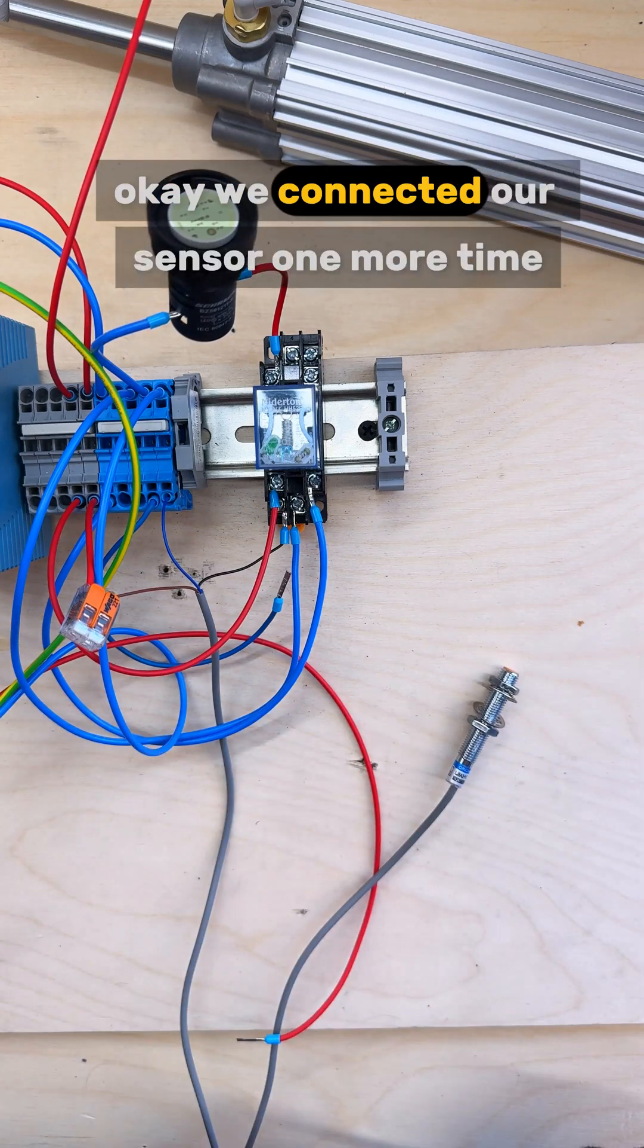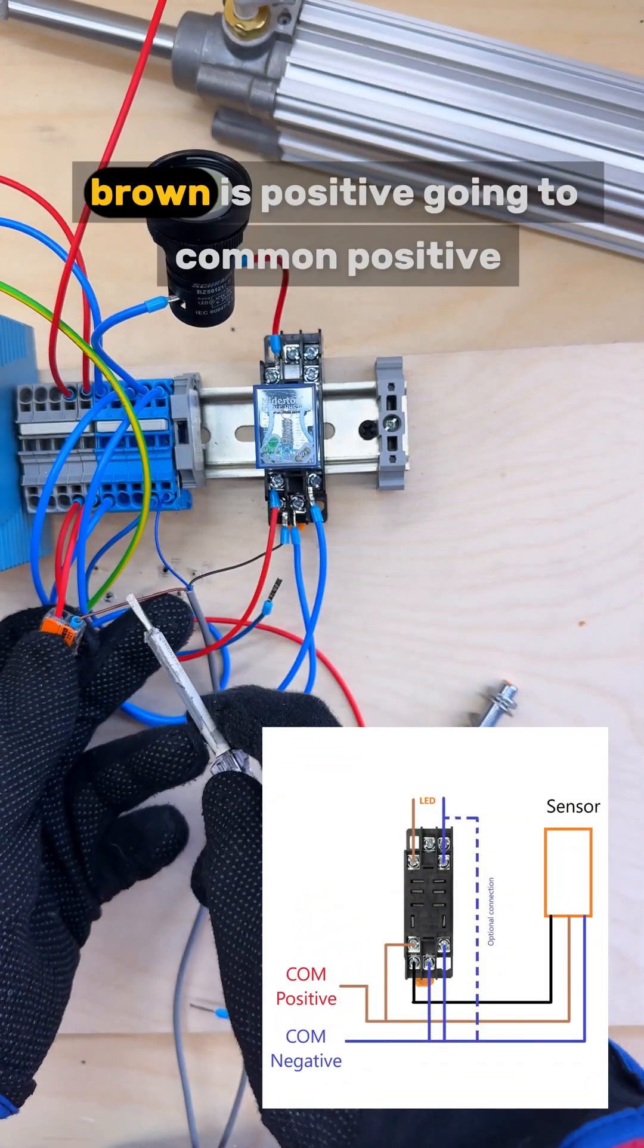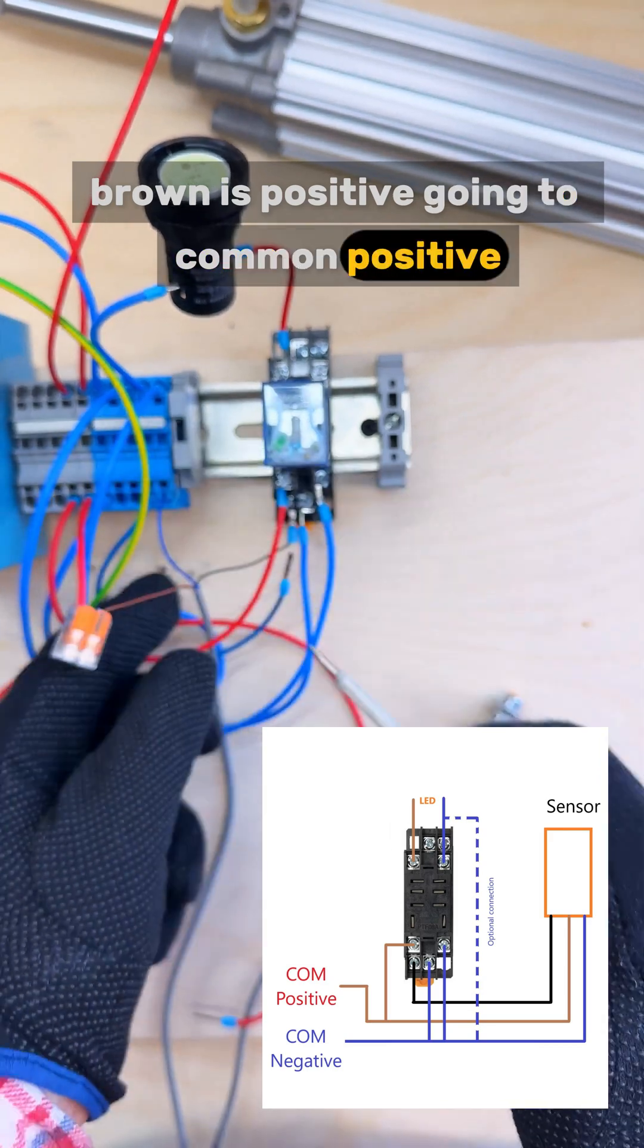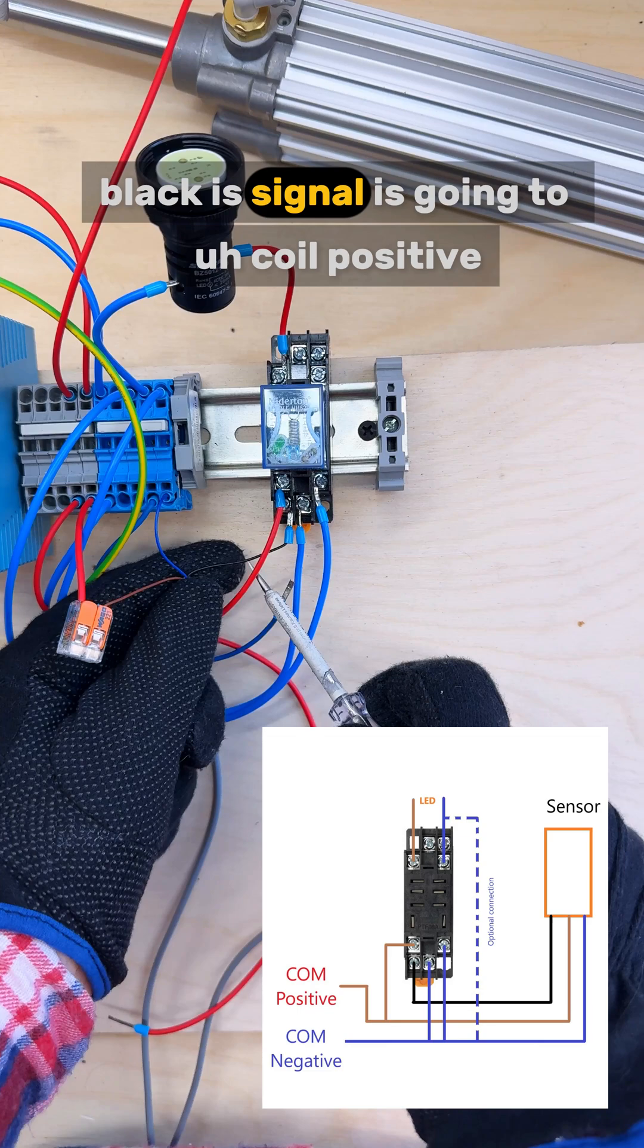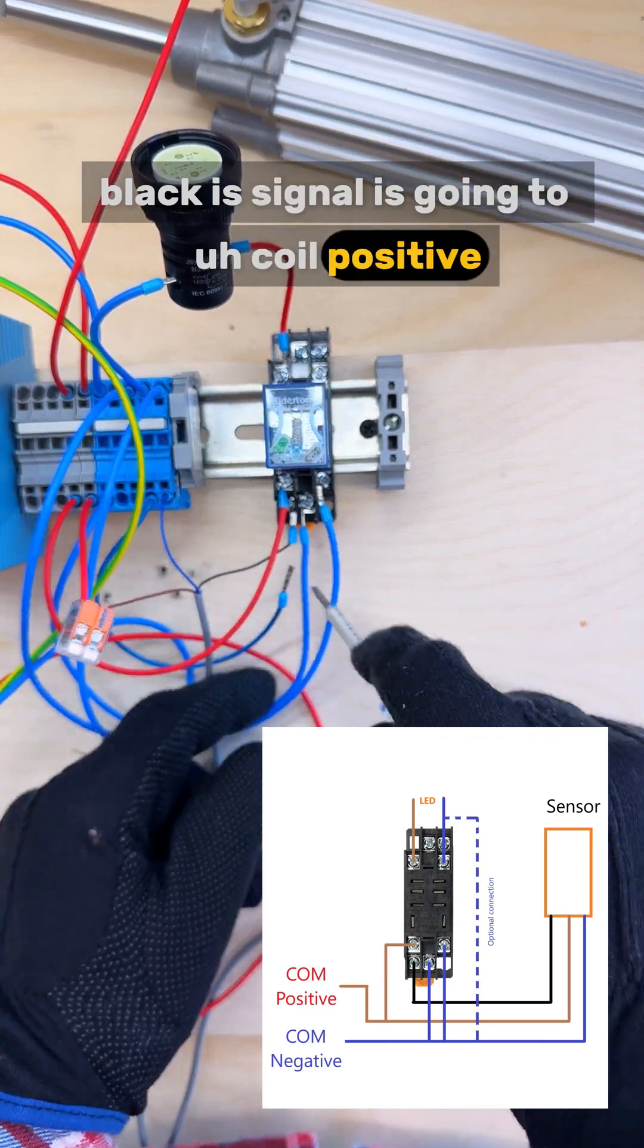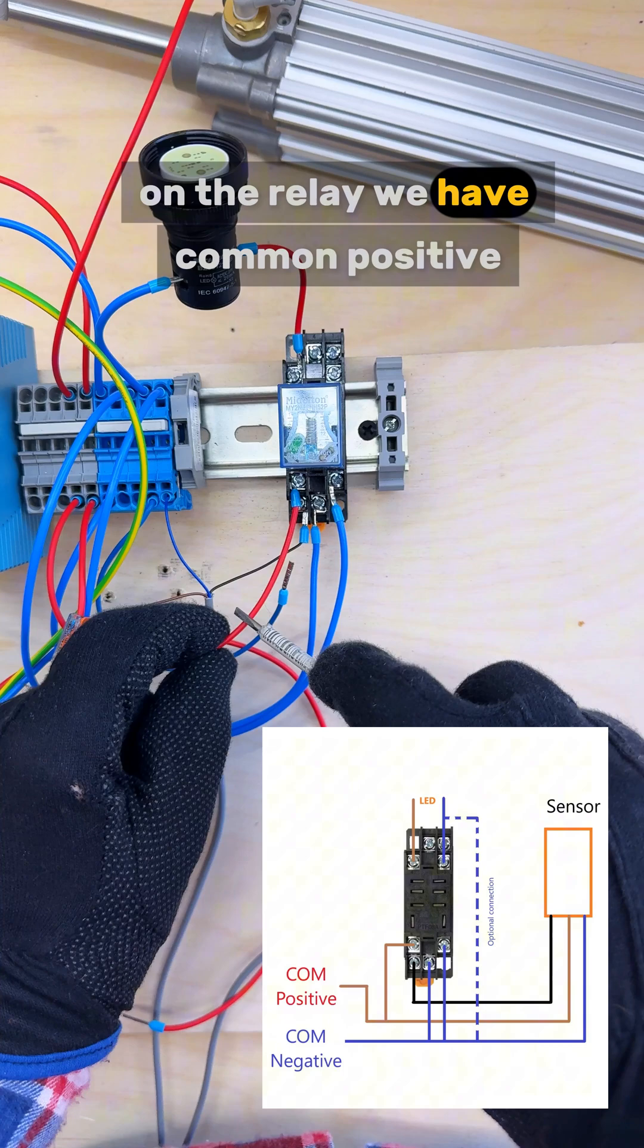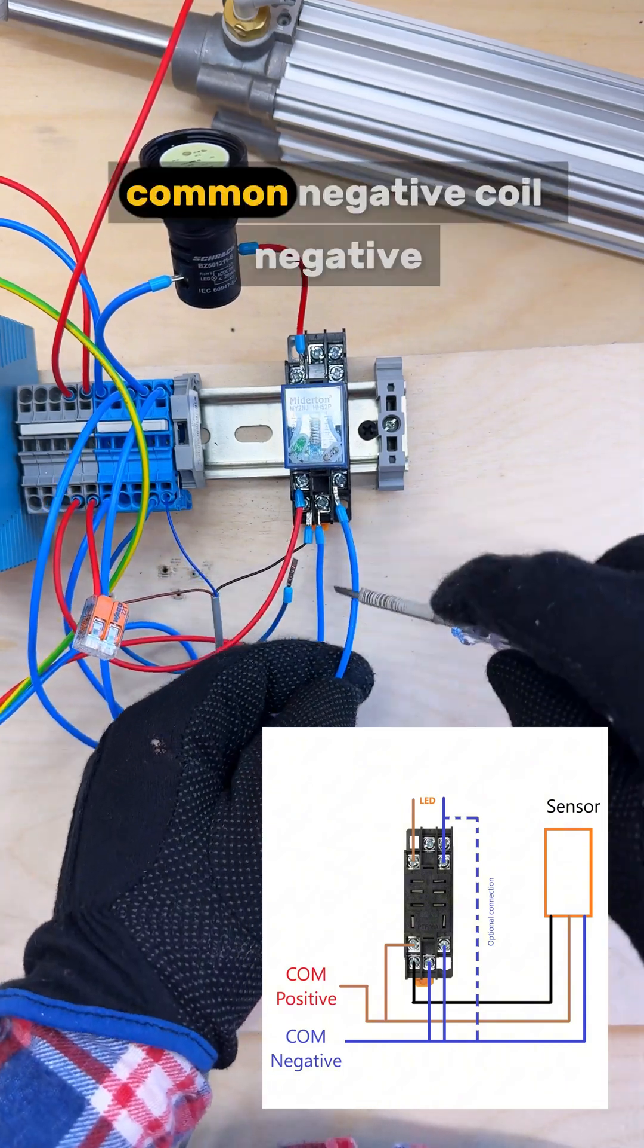Okay, we connected our sensor one more time. Brown is positive going to common positive. Blue is negative going to common negative. Black is signal going to coil positive. On the relay we have common positive, common negative, and coil negative.